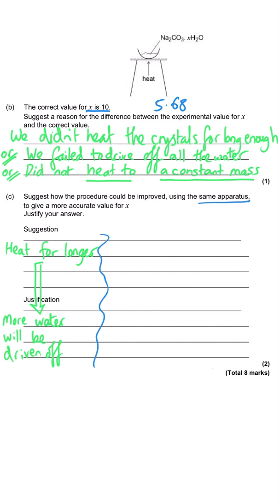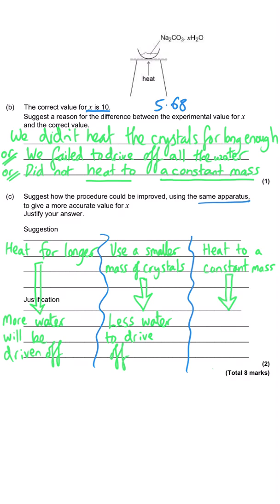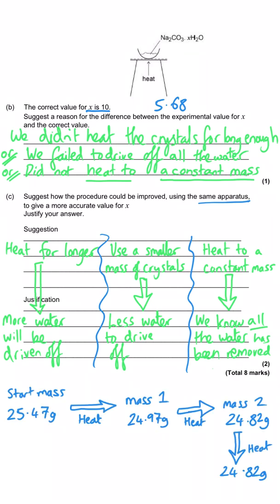They're asking us to suggest how the procedure could be improved using the same apparatus. The first option is simply we could say heat it for longer, and if we heat it for longer more of the water will be driven off. We could also say we should use a smaller mass of crystal, because that will make it easier to drive off all of the water. Our third option is we could heat the crystals to a constant mass, and the justification is we would really know that all the water had been driven off because each time you weigh the crystals the mass will stay the same.